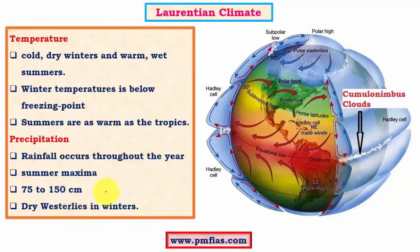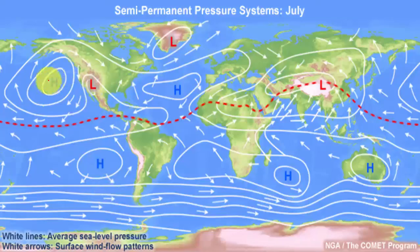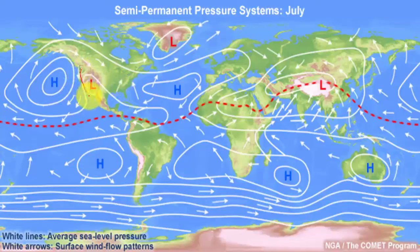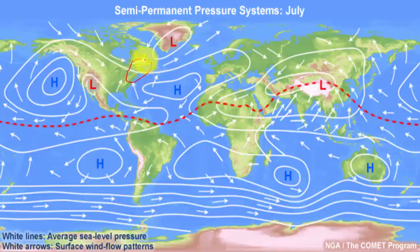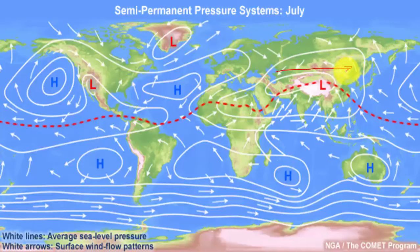Dry westerlies in winter are not totally dry — they bring some rainfall in the form of frontal cyclones. As westerlies move eastward they lose most moisture, but in the Northeast American region the Great Lakes supply good moisture to the westerlies, resulting in comparatively good rainfall. This part of Canada is called the Canadian Shield or Laurentian Plateau, hence the name Laurentian type. The Asiatic region is also affected by continentality, with offshore trade winds especially in winter.